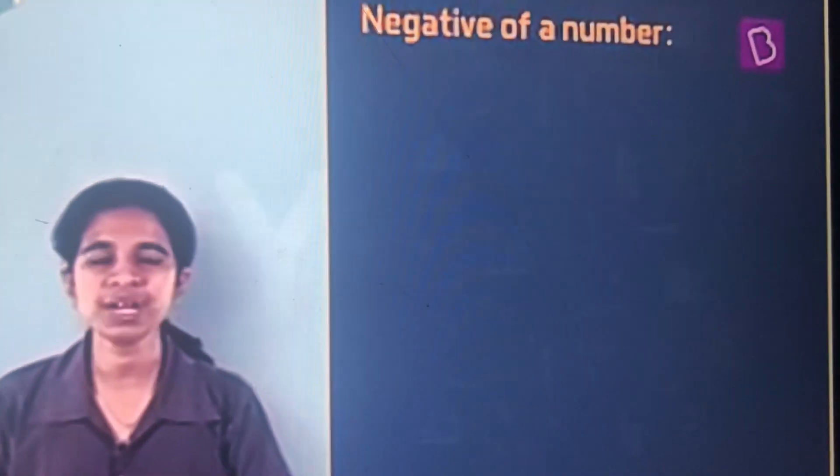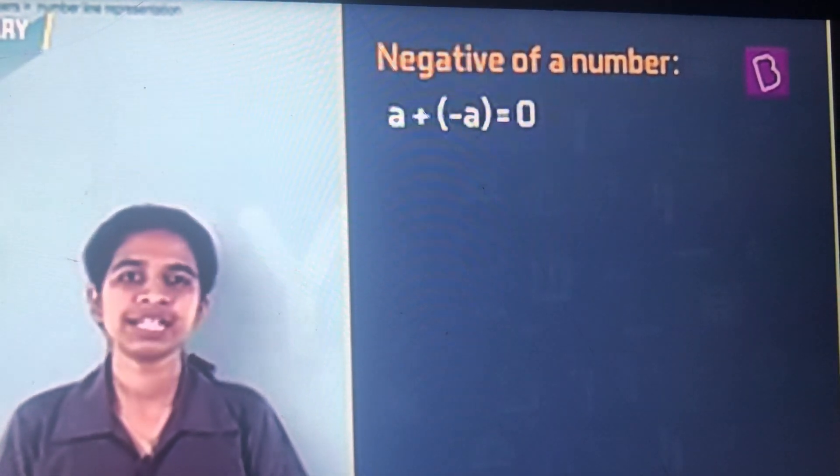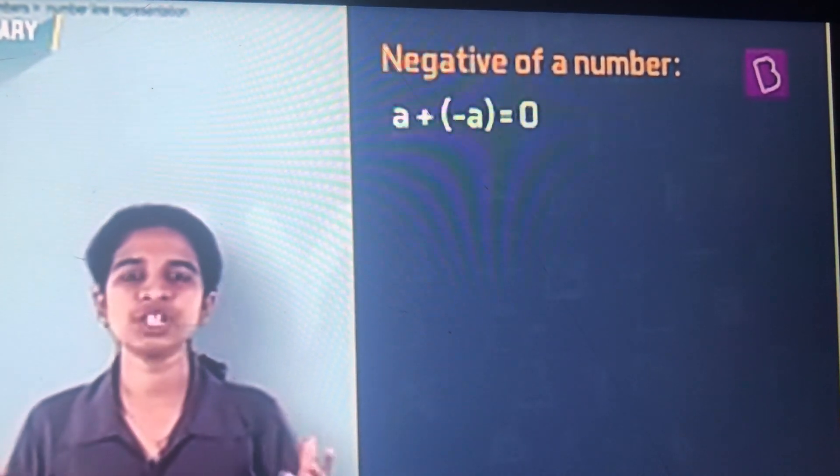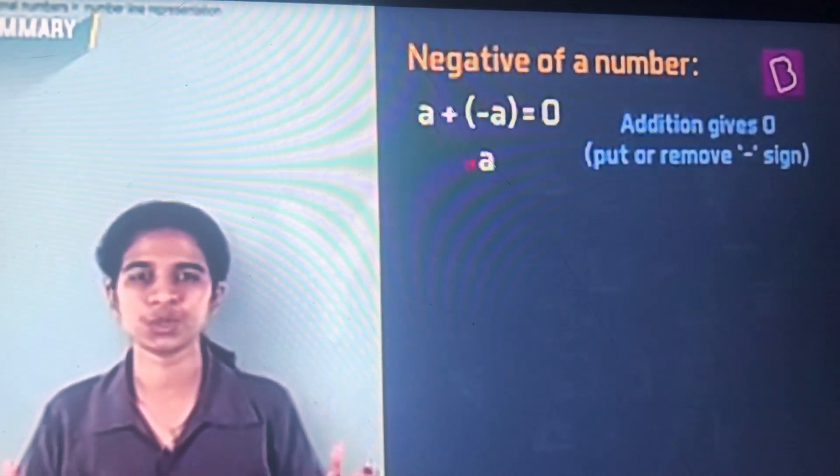Then we saw the negative of a number. Negative of a number is nothing but when addition gives 0. That is, you put or remove the minus sign. If there is a minus sign, you remove it. If there isn't, you put one.